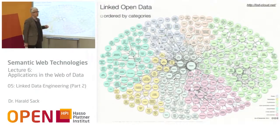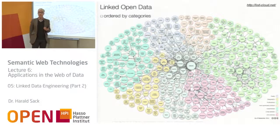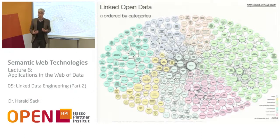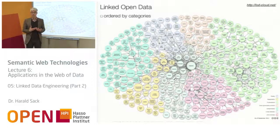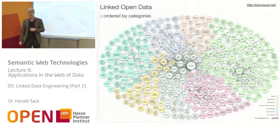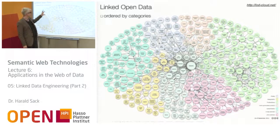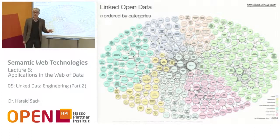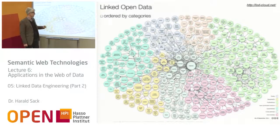In the last part of the lecture we learned about the Linked Data or the Linked Open Data Cloud, which is a huge network of datasets published via the Linked Data principles and linked among each other. You see here the Big Hub, DBpedia, in the center of this Linked Data Cloud. This is a special version where the different categories of datasets are marked with specific colors so you can distinguish them.